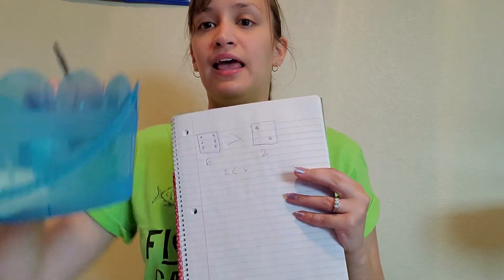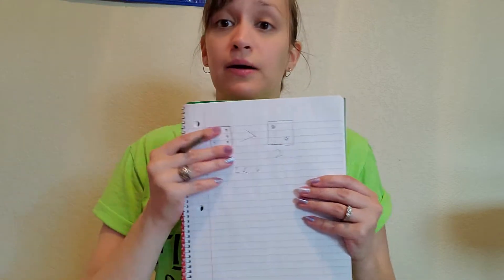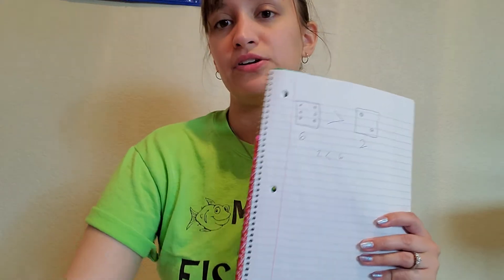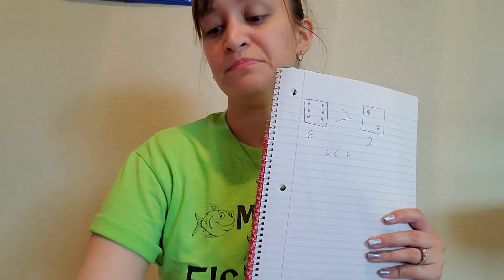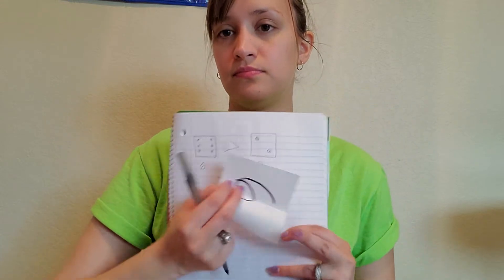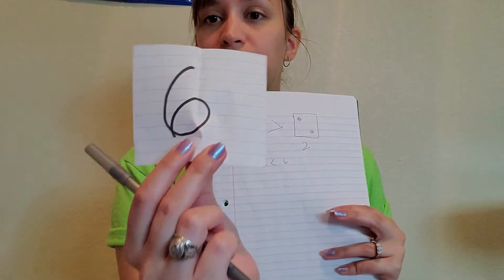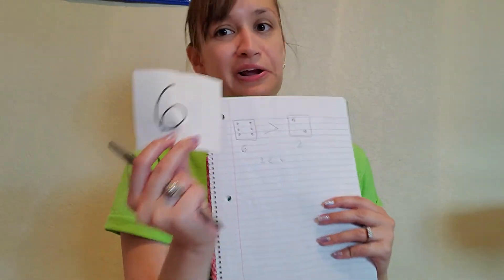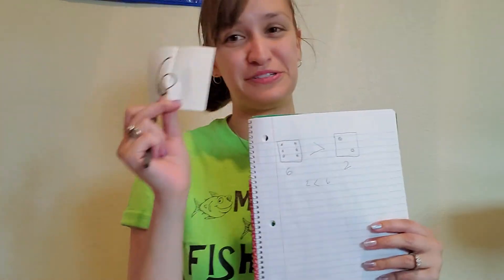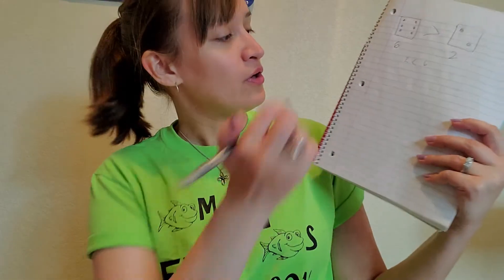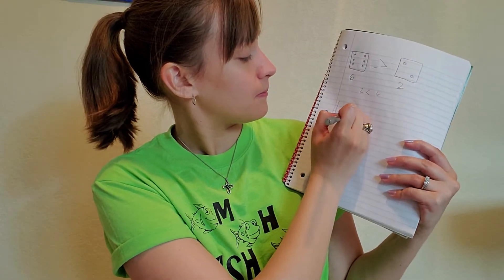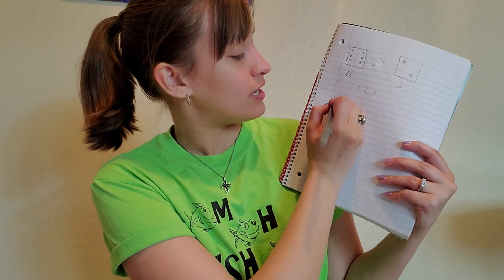The other way is I wrote numbers on a piece of paper and put it in a bucket. Numbers one through six. And so you'll just draw out a number from the bucket. So you pick your number. My first number is six.